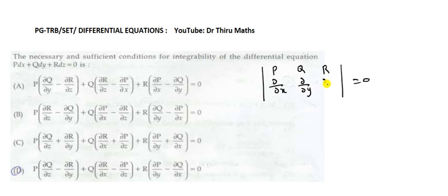The determinant is written as: P, Q, R in the first row; ∂/∂x, ∂/∂y, ∂/∂z in the second row; and again P, Q, R in the third row.